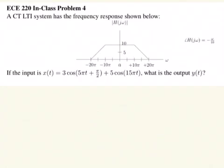In this example, we're given a couple of inputs. x(t) is 3 cosine(5πt + π/2) plus 5 cosine(15πt). We're asked what the output y(t) is of this system that has the magnitude response shown here. The phase response is also a linear phase — it's given as minus omega over 10.